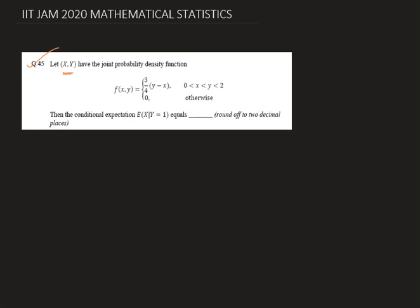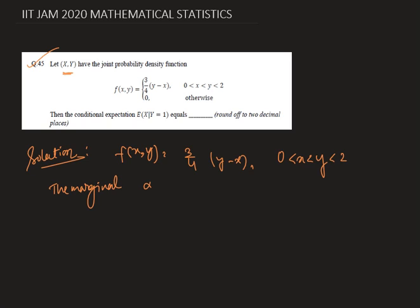The given joint density is 3 by 4 y minus x where x is less than y, 0 to 2. Now the marginal density of y is f of y. We get the marginal density if we integrate the joint density on x. The range of x is 0 to y, so we have 3 by 4 y minus x dx.